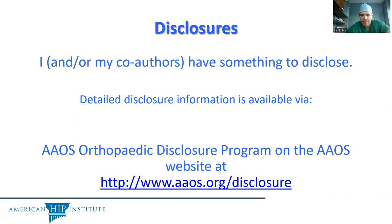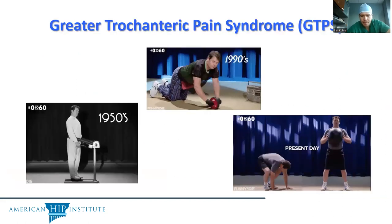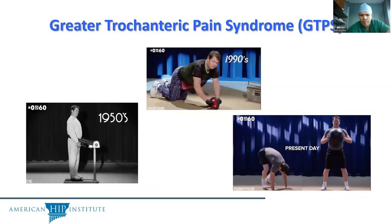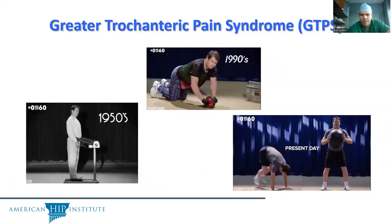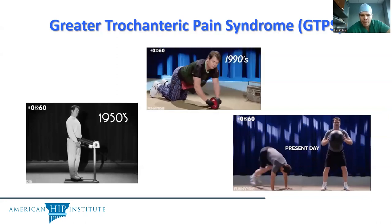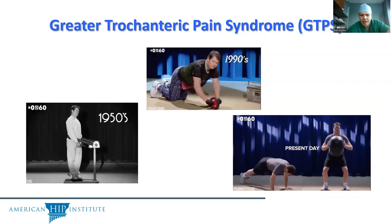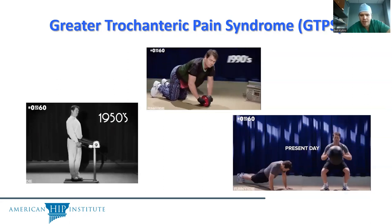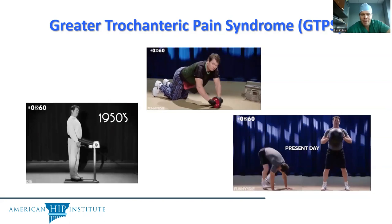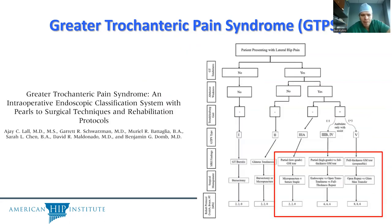Disclosures are on the AOS Academy website. One of the major focuses for periarticular hip muscle injuries is this broad diagnosis called greater trochanteric pain syndrome. It is something that's all-encompassing, which can be a challenge to define, but sort of all-encompassing for lateral hip pain or any pain on the lateral aspect of the hip or greater trochanter.